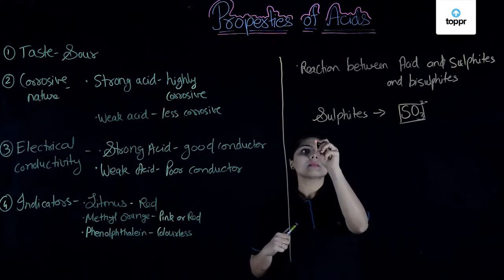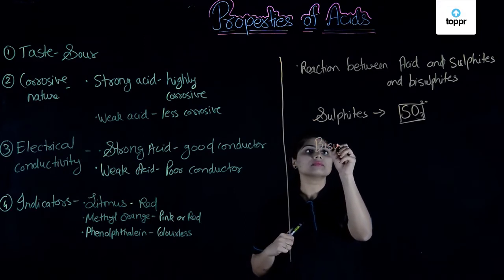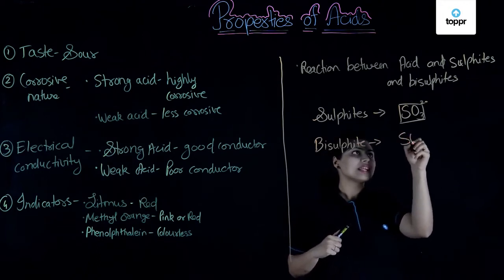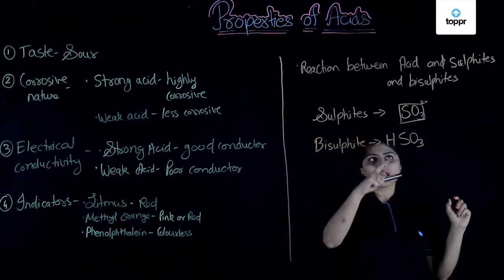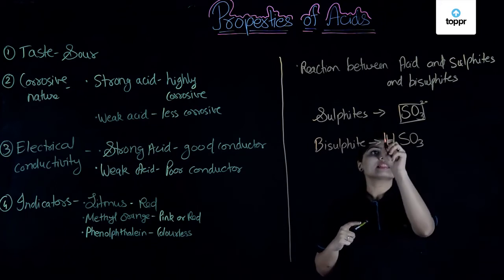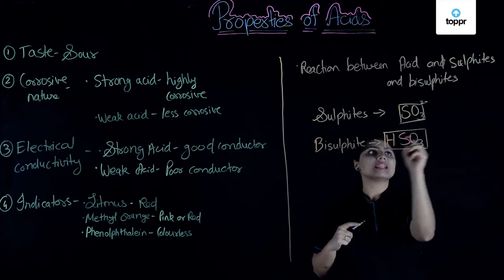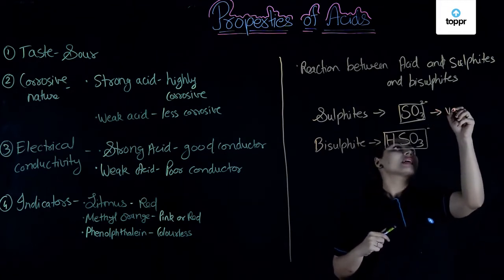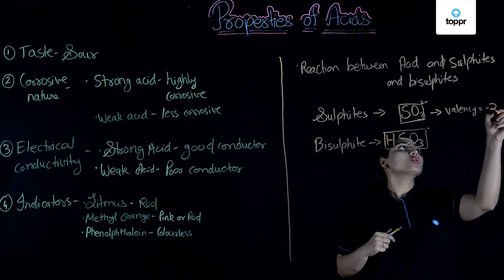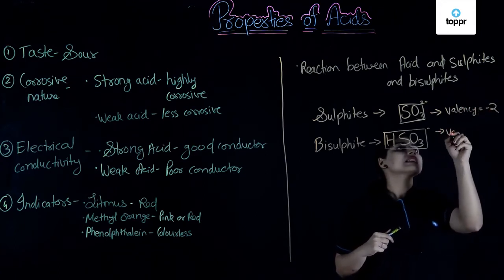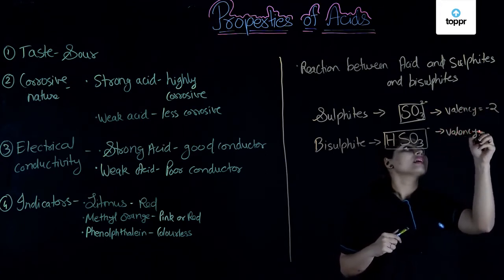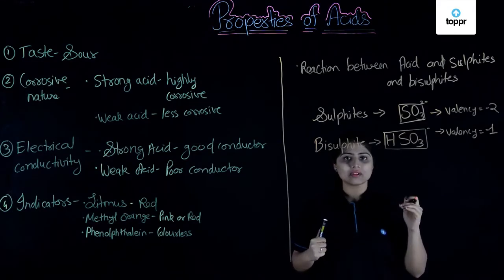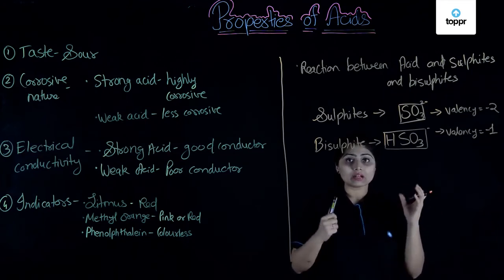Now, let us see what is bisulphite. Bisulphite is nothing but, it will be sulphite SO3 but bi means H. So, it is also called hydrogen sulphite. This entire group has valency minus one. So, it has a minus charge on it. The valency of sulphite is minus two and the valency of bisulphite is minus one. Sulphides and bisulphite, they are the ions, polyatomic ions. They cannot be alone. They are always combined with something or the other.